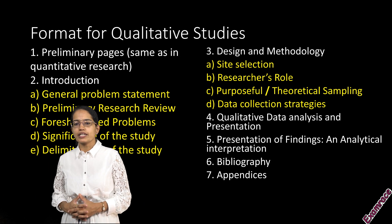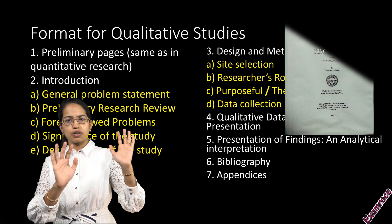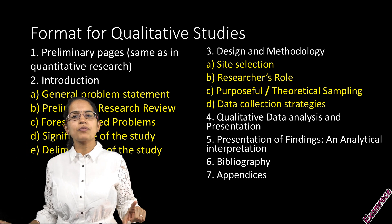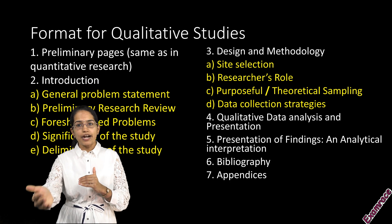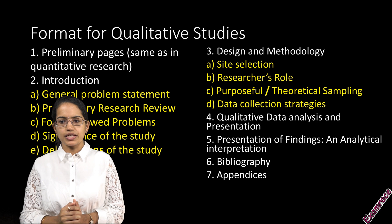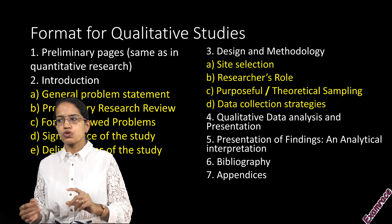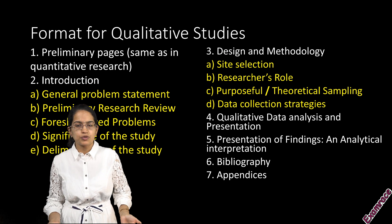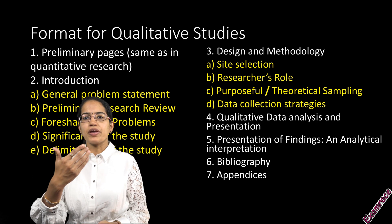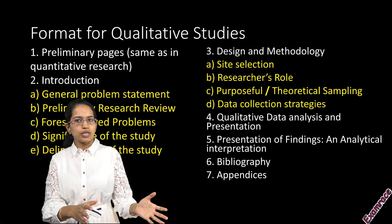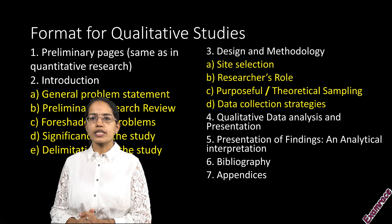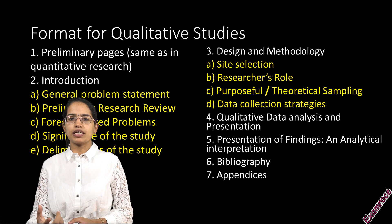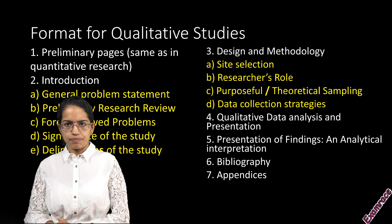The next is qualitative studies. Under qualitative studies, the preliminary pages would remain the same. In the introduction, you would have a general problem statement and the foreshadowed problems that could be addressed. The methodology would be very different — you would select a site, understand the role of the researcher, do theoretical or purposeful sampling, and mention the various strategies for data collection. The strategies and analysis would be qualitative, as it is much applicable for humanities. You would be presenting the findings as an analytical interpretation of the research. Finally, the bibliography and appendix would remain the same.